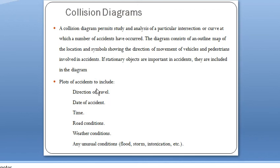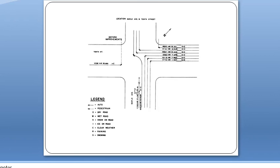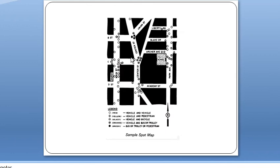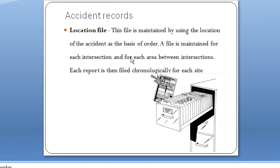The plots in the collision diagram should include direction of travel, date of accident, time, road conditions, weather conditions, and any unusual conditions like flood, storm, or intoxication. This is an example of a collision diagram where the direction of movement is shown along with date and time of accident. You should also go through the textbook - Genna and Gestor - for further study and analysis.